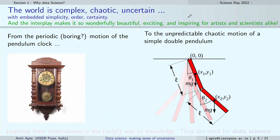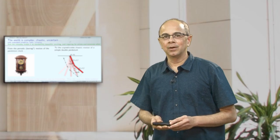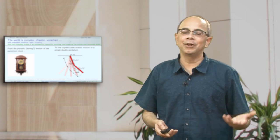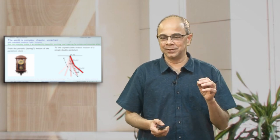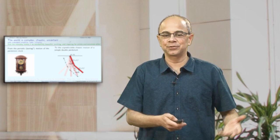The world is complex — I hope all of you can appreciate that; it is a statement that does not need too much explanation. But maybe I will explain a little bit about what I mean by complexity. It is chaotic — which we will talk about — and uncertain, as I just illustrated.